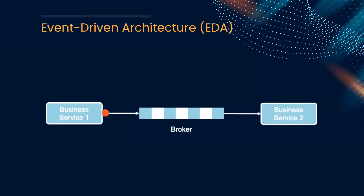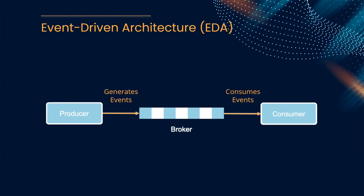Event-driven architecture, also known as EDA, is a messaging paradigm that offers a solution to the complex network of interdependent services in a microservices architecture. With EDAs, services transmit messages to one another via a shared broker. So Business Service 1 sends data to an intermediary broker, which forwards the data to Business Service 2. Services are classified as producers, consumers, or both — producers generate events and consumers consume events. EDAs allow producers and consumers to communicate without even being aware of each other's existence. This communication is facilitated by a broker, a centralized service that acts as a publish-subscribe mechanism where messages route through. The broker receives, stores, and delivers messages to interested consumers.